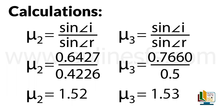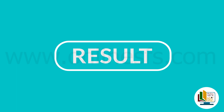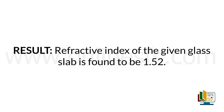Second set of observations ke liye refractive index 1.52 calculate hua. And for the third set of observations the refractive index was found to be 1.53. Ab hum mean refractive index find karenge. Mean refractive index ke liye teeno observations ke refractive index add karke divide by 3 kar denge. The mean refractive index is found to be 1.52. Refractive index of the given glass slab is found to be 1.52. I hope ke aap ko aaj ke practical experiment ke through laws of refraction of light achhi tarah samajh aa gaye honge. Thank you!